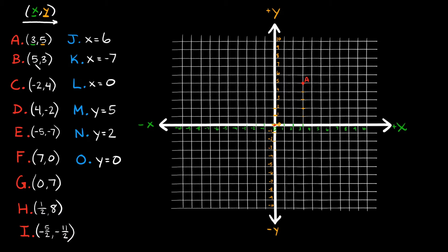Point B is at (5, 3). Starting from the origin, we move five spaces in the x-direction — 1, 2, 3, 4, 5 — and then three spaces in the positive y-direction — 1, 2, 3. So this point is point B. Point C has a negative number: it's at (-2, 4). We move negative two spaces in the x-direction — negative 1, negative 2 — and then four spaces in the y-direction — 1, 2, 3, 4. So this point is point C.